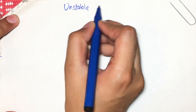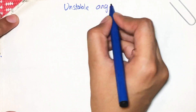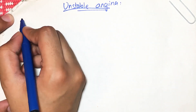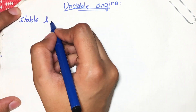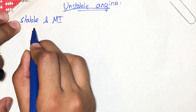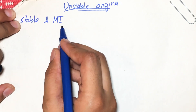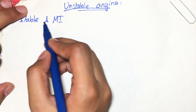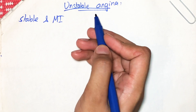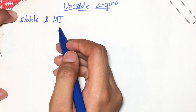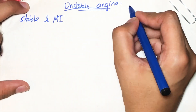Let's talk about unstable angina — what happens in unstable angina and why it is called unstable. Unstable angina is classified between stable angina and myocardial infarction. Stable angina is not much to worry about, but myocardial infarction is a very serious problem. Unstable angina comes between both: it is more dangerous and more problematic than stable angina, but less dangerous than myocardial infarction.